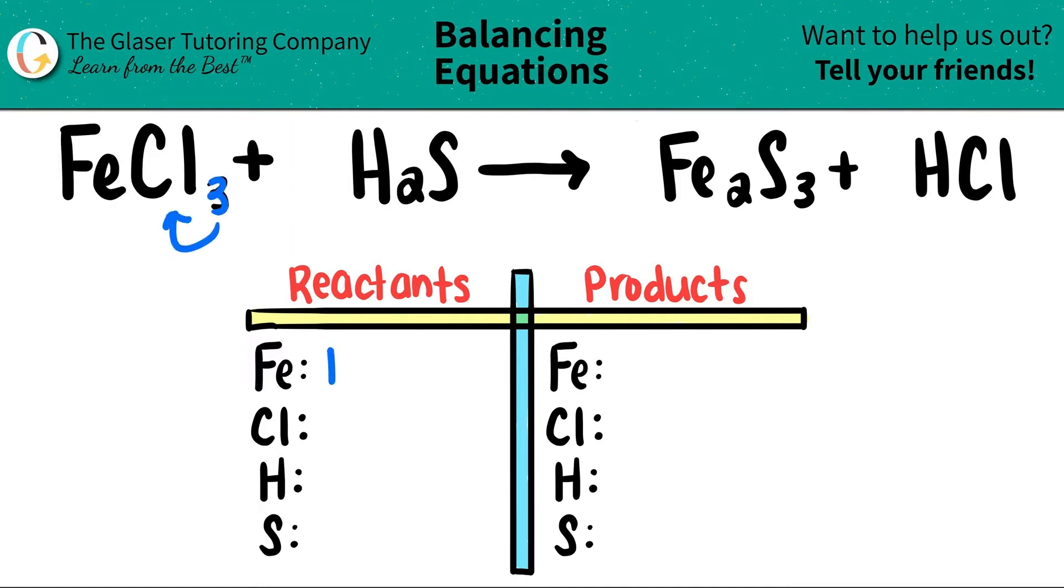I have three chlorines. I'm going to put a three here. I have two hydrogens. I'm going to put a two here. And then for the sulfur, there's only one there. So one.